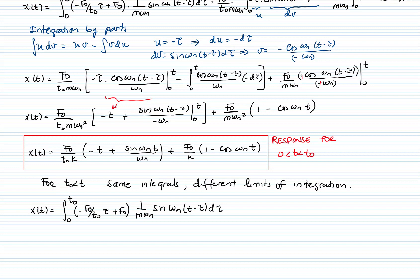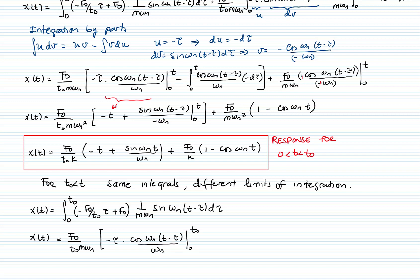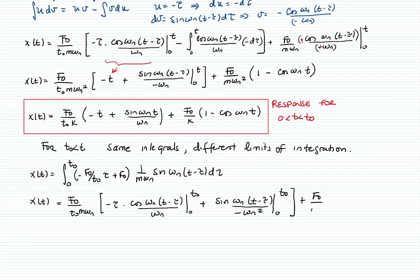Since it is the same integral, I copy the result from before: −τ · cos(ωₙ(t − τ)) / ωₙ, then the second term sin(ωₙ(t − τ)) / ωₙ², and the third term involving cos(ωₙ(t − τ)) / ωₙ. Now I evaluate all three terms from 0 to t₀ rather than from 0 to t.